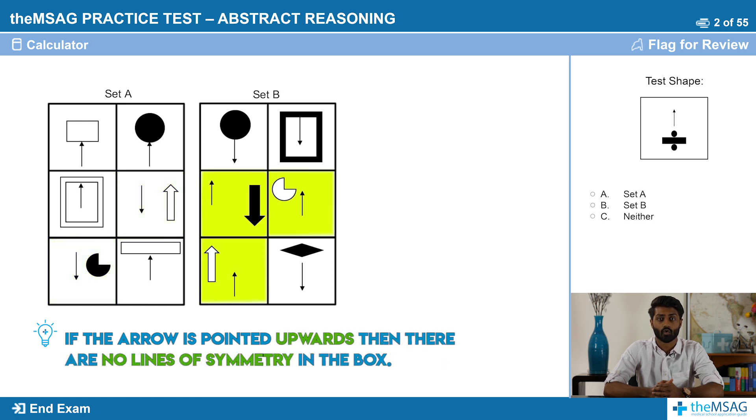In set B, if the arrow is pointed upwards, then there are no lines of symmetry in the box. If the arrow is pointed downwards, then there is a vertical line of symmetry in the box.